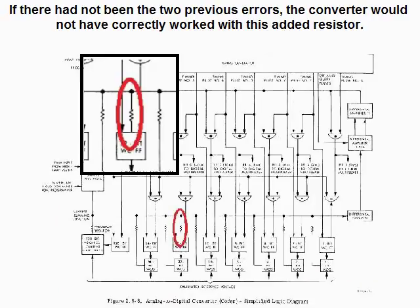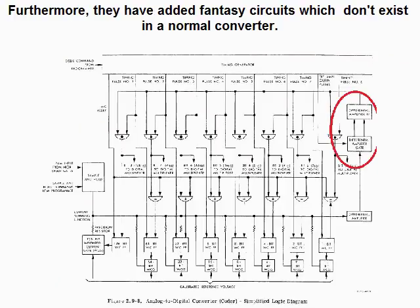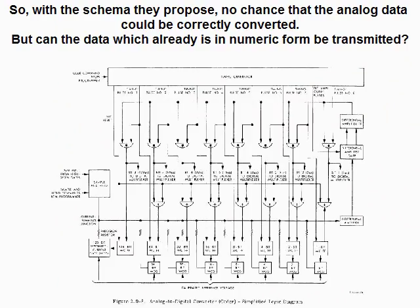If there had not been the two previous errors, the converter would not have correctly worked with this added resistor. Furthermore, they have added fantasy circuits which don't exist in a normal converter. So with the schema they propose, there is no chance that the analog data could be correctly converted. But can the data which is already in numeric form be transmitted?